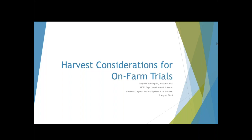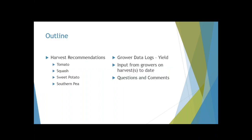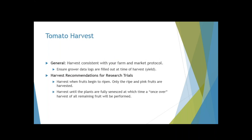For this program we'll jump right into harvest considerations for on-farm trials. Today we're going to talk about harvest considerations — all our growers should have their grower data logs. We will go through all four crops briefly: recommendations for tomatoes, squash, sweet potato, and southern peas. All of our growers likely have at least one or two of these crops as part of the farm trials.